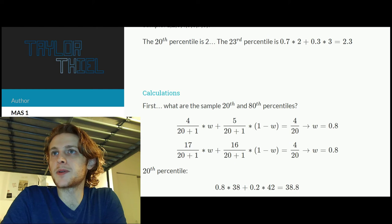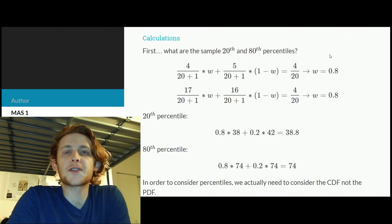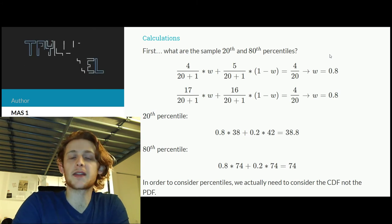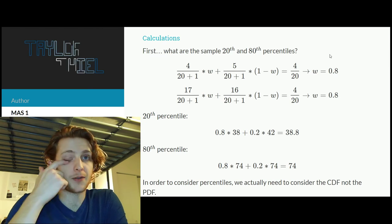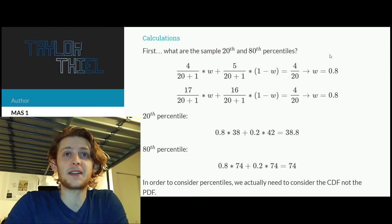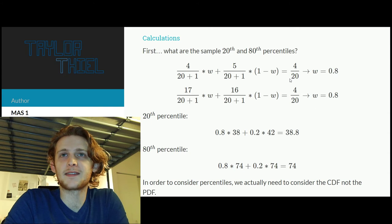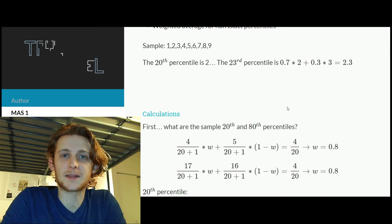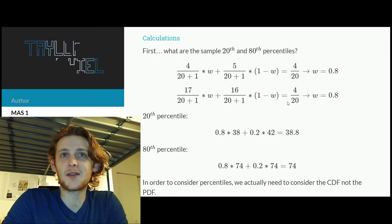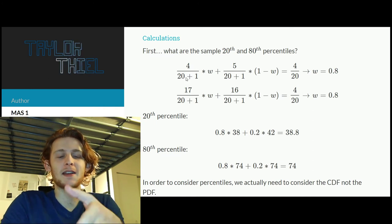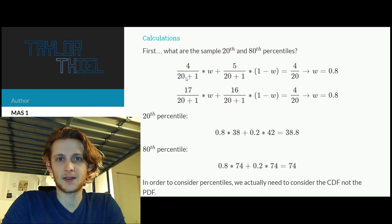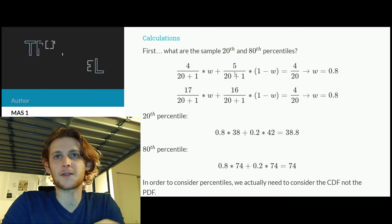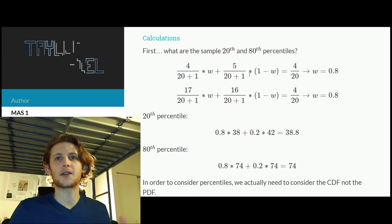So now we can actually jump into it. So first off, we want to know what are our sample observations for the 20th and 80th percentile. So this is a little bit, I feel like this is extra work that is silly for this problem. I wish they gave us 19 observations and then you could just pick the corresponding 20th and 80th percentile, but they give us 20.